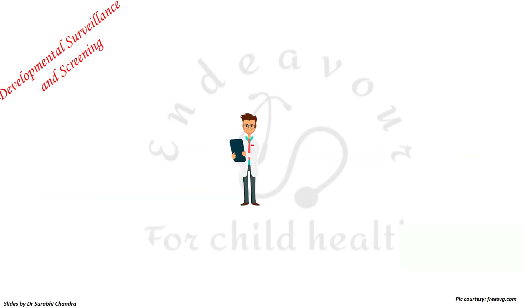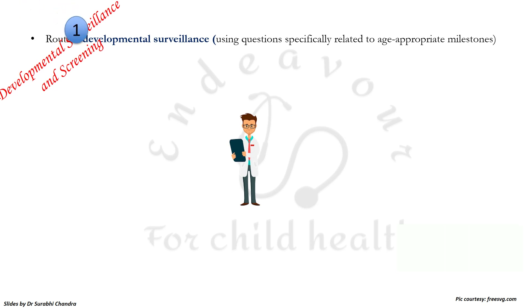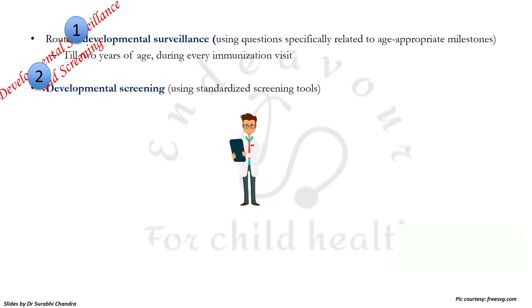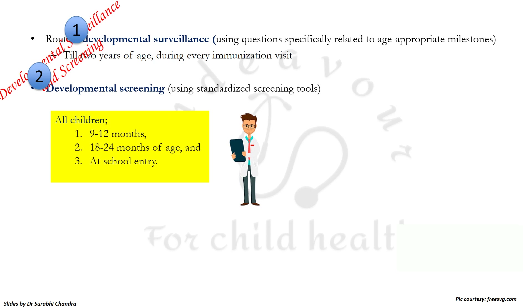There are two important concepts. First is developmental surveillance, done using questions specifically related to age-appropriate milestones, which should be done till 2 years of age every time the child comes for routine immunization. Second is developmental screening, done using standardized screening tools, which should be done in all children at 9-12 months, between 18-24 months, and at the time of school entry.